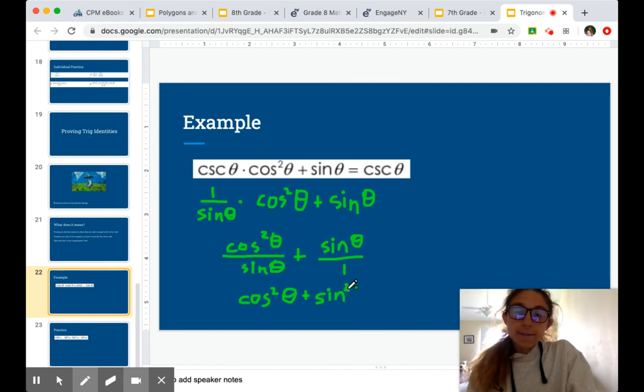So now, I have our favorite trig identity in the numerator. And I've got sine in the denominator. Now, what do we know about cosine squared theta plus sine squared theta?